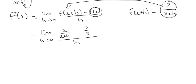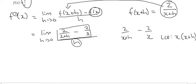Now ignore the bottom and zoom into this part. We have 2 fractions, and when you're subtracting or adding 2 fractions you need a common denominator. The lowest common denominator here is x(x+h).